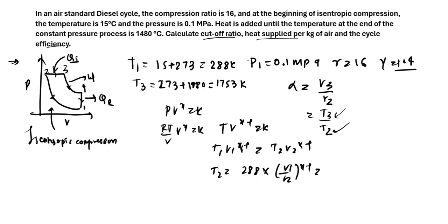And V1 by V2 can be substituted as the compression ratio because V1 is the volume before compression, and V2 is the volume after compression. So we have 288 times the compression ratio of 16 to the power gamma minus 1 as 0.4. So it can be calculated at 873.05 Kelvin. So we have calculated T2 as 873.05 Kelvin.